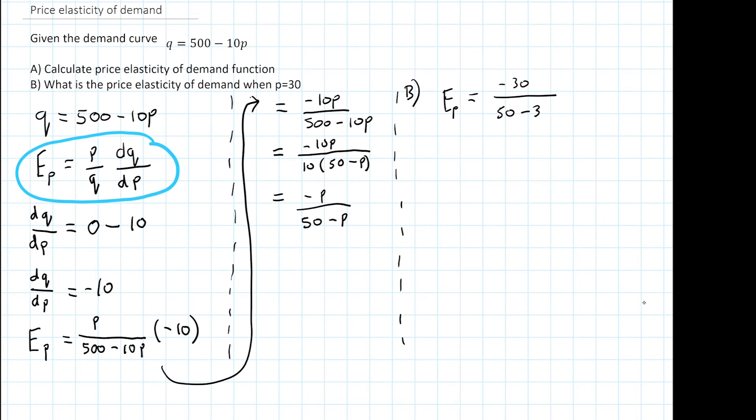Ep equals minus 30 over 50 minus 30, and we can simplify this a bit easier. Make it tidy.